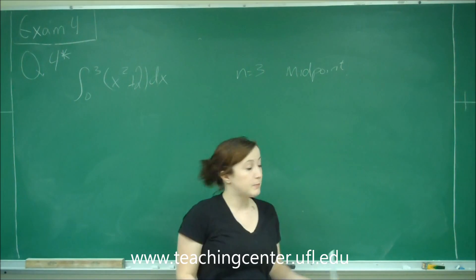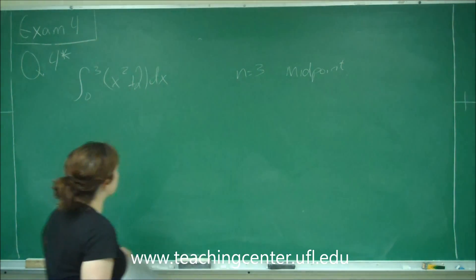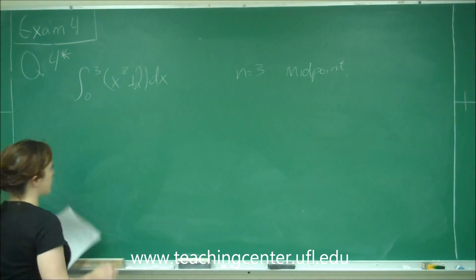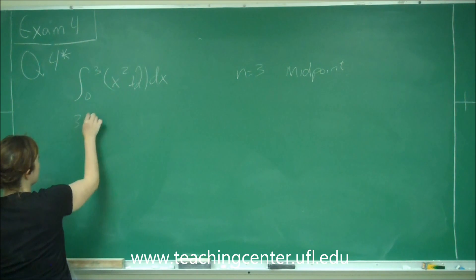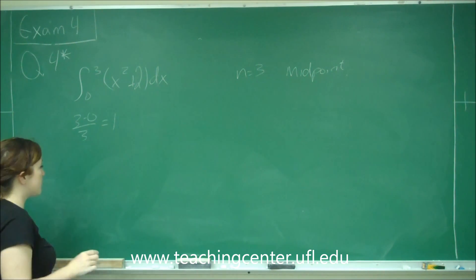So we want to use the midpoint, and we're going to use three subintervals. This is from zero to three, so we get three minus zero over three, so each of our widths should be one.